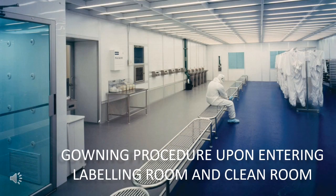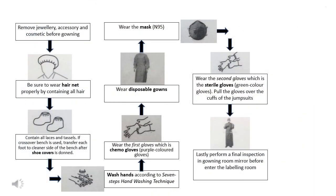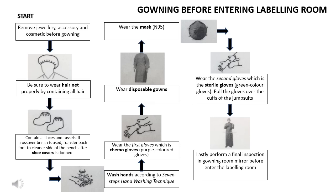Gowning procedure upon entering the gowning room: Remove jewelry, accessories, and cosmetics before gowning. Next, be sure to wear a hairnet properly by containing all hair. Contain all laces and tassels by donning shoe covers — if a crossover bench is used, transfer each foot to the cleaner side of the bench after shoe covers are done. Next, wash hands according to the seven-step hand washing technique. Wear the first glove, which is the chemo glove, then wear a disposable gown. Next, wear the mask. Wear the second gloves, which are the sterile gloves — pull the gloves over the cuffs of the jumpsuits. Lastly, perform a final inspection in the gowning room mirror before entering the labelling room.